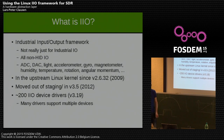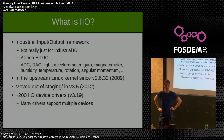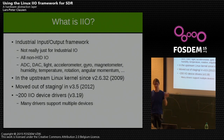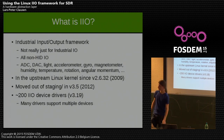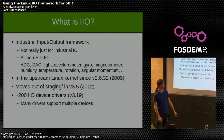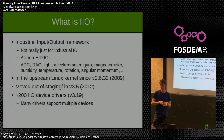IIO has been in the upstream Linux kernel since version 2.6.32, since 2009. It was originally developed by Jonathan Cameron at university as part of a research project — he had lots of sensors and needed a common framework to represent them. It was initially merged into the staging area of the kernel, then moved out of staging at release 3.5 about three years ago. As of today there are drivers for about 200 different devices, and each driver typically supports more than one device, so roughly 500 to 600 devices are supported.